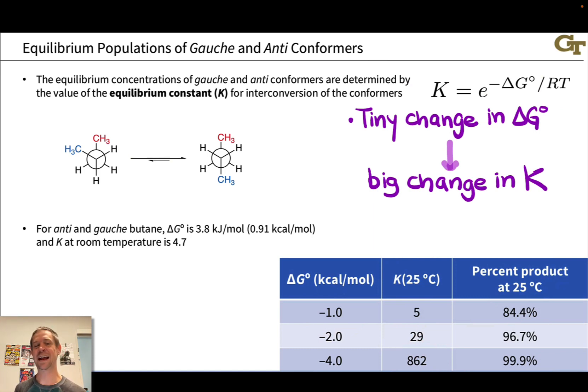In the particular case of anti versus gauche butane, the energy difference is 3.8 kilojoules per mole, or 0.91 kilocalories per mole. And we can model that by saying, if we call the zero of energy the product anti-conformer, the reactant gauche conformer is about 0.91 kilocalories per mole higher in energy. And if we do the math using this equation, and 25 degrees Celsius as the temperature and the ideal gas constant there, we come up with an equilibrium constant of 4.7.